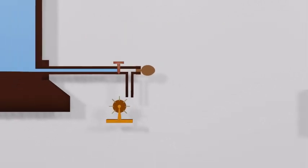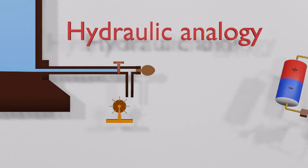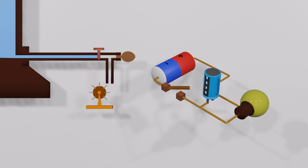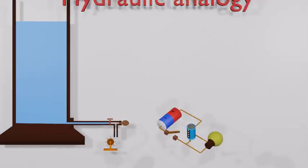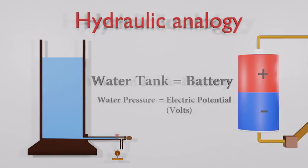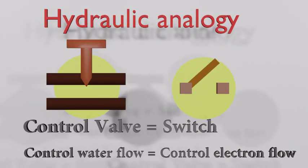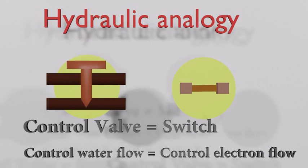We call this the hydraulic analogy, because various electronic components in a circuit are represented by their hydraulic equivalents. The battery is equivalent to the water tank, electric potential is equivalent to water pressure, and the electric switch is equivalent to the water control valve. Valves control the water flow and switches control the electron flow.